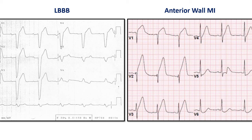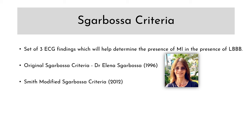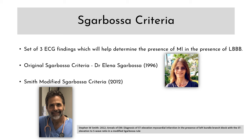Sgarbossa Criteria is a set of three ECG findings which will help diagnose MI in the presence of LBBB. The original criteria was proposed by cardiologist Dr. Elena Sgarbossa in 1996. Prior to this, it was widely believed that it was not possible to diagnose MI in the presence of LBBB. The original Sgarbossa Criteria had a high specificity of around 98% but a low sensitivity of around 20%. In 2012, Dr. Stephen W. Smith, who is an emergency physician, modified the Sgarbossa Criteria so that now both the sensitivity and specificity are in the early 90s. Today, this is the accepted standard for interpreting LBBB ECGs.